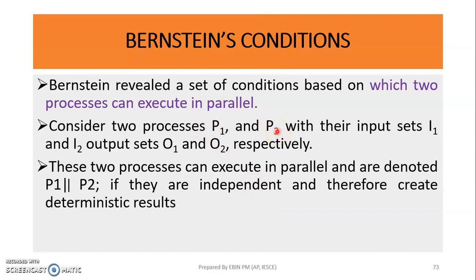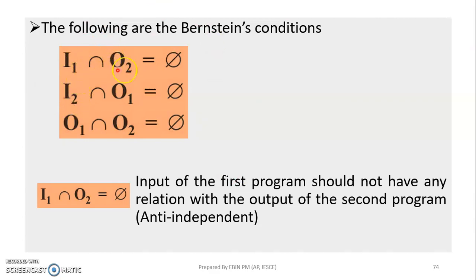Suppose P1 and P2 are two processes. P1 has an input set and an output set. Similarly, P2 has an input set and an output set. The two processes are in parallel execution. The three conditions are: I1 intersection O2 is equal to null, I2 intersection O1 is equal to null, and O1 intersection O2 is equal to null.